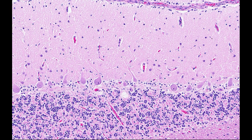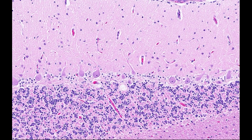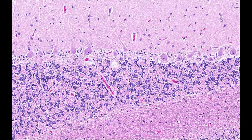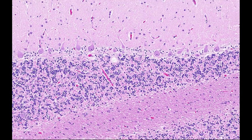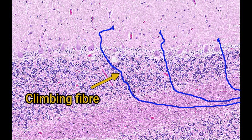Not all of the input to the Purkinje cells comes from the granule cells. The climbing fibres we mentioned earlier come directly from the white matter, pass through the granular layer, and synapse directly with the Purkinje cells in the molecular layer, bypassing the granule cells entirely.